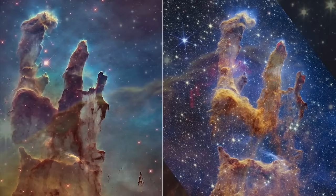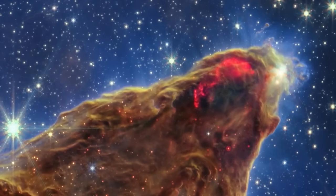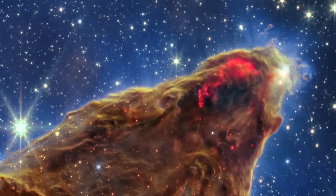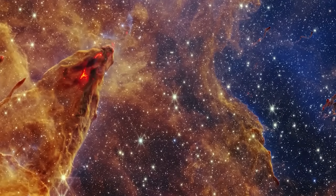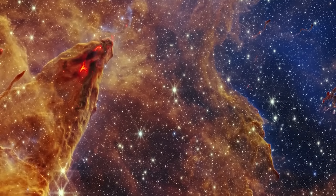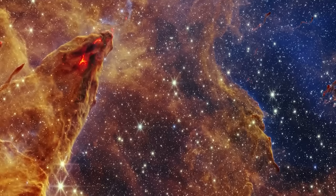The stars that appear as red dots are baby stars, only a few hundred thousand years old, and the red streaks that can be seen in the dust and gas clouds are nascent balls of gas, that will later become stars.